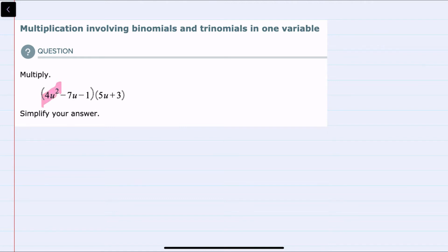I'm going to start off with this 4u squared and multiply the 5u in the second expression. The 4 times 5 is 20, and the u squared times the u is u³. Then I'll multiply the second part of the binomial. So we have 4u squared times 3. The 4 times 3 is 12, and we still have the u squared. So we've multiplied the 4u squared by each term in the binomial.